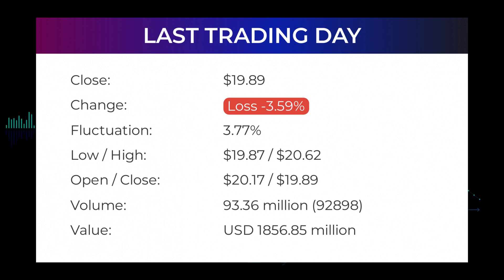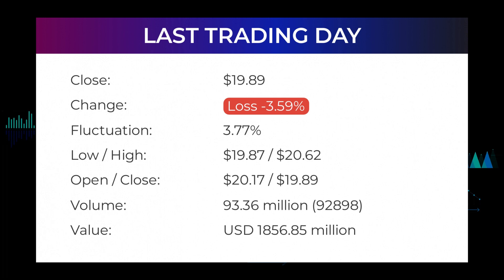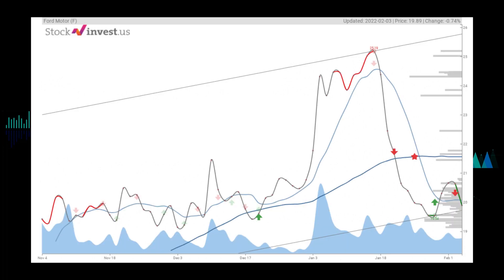During the day the stock fluctuated 3.77% from a day low at $19.87 to a day high of $20.62. The price has fallen in eight of the last 10 days and is down by minus 8.13% for this period. Volume increased on the last day by 93,000 shares, but on falling prices this may be an early warning, with risk slightly increased over the next couple of days. In total, 93 million shares were bought and sold for approximately $1.86 billion. The 52-week high was $25.87 and the lowest price was $11.13. The current price is $23.12 below the 52-week and all-time high of $25.87.